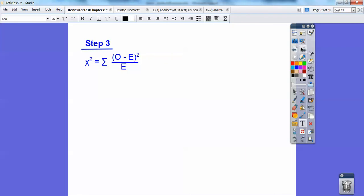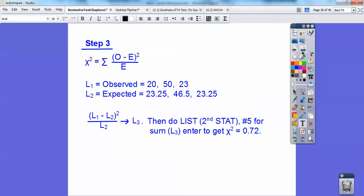Or we can do this in the calculator. So list one put in the observed, list two put in the expected. And then in a clear screen, do list one minus list two squared divided by list two and then store that in list three. And then when you do that, then you're going to do the sum. So the sum is located under list. And list is second function stat. And then number five. And then if you enter that, it'll sum all those up in list three. So you get 0.72.